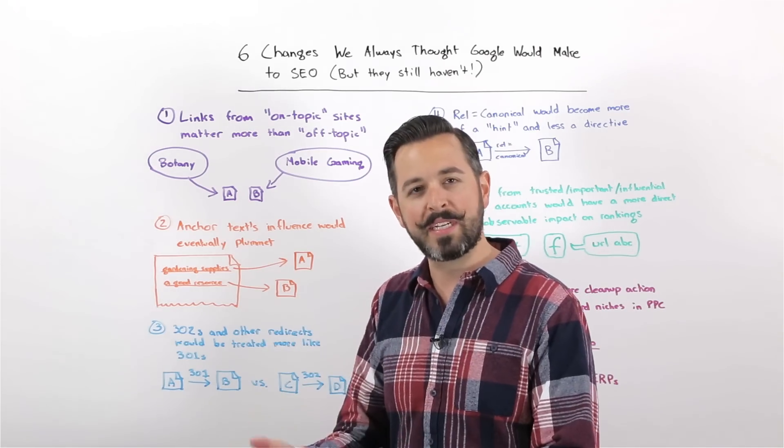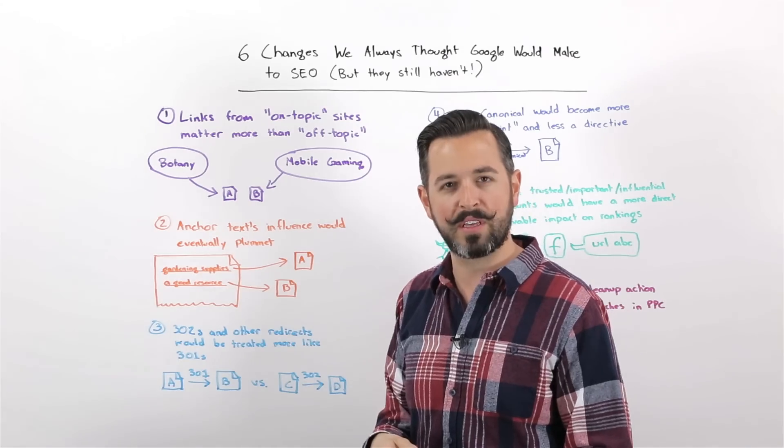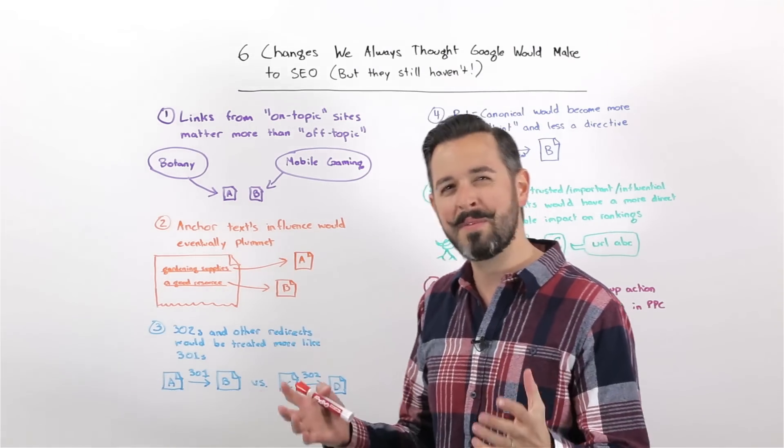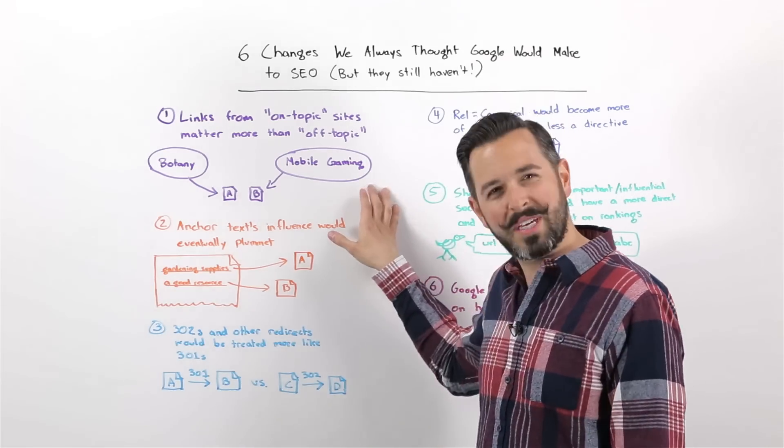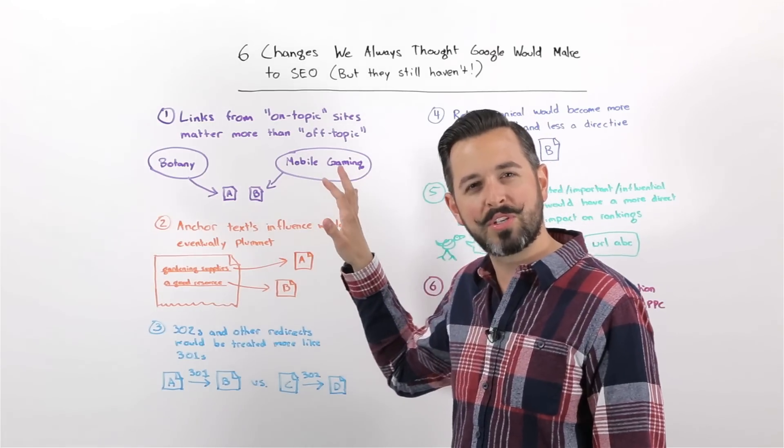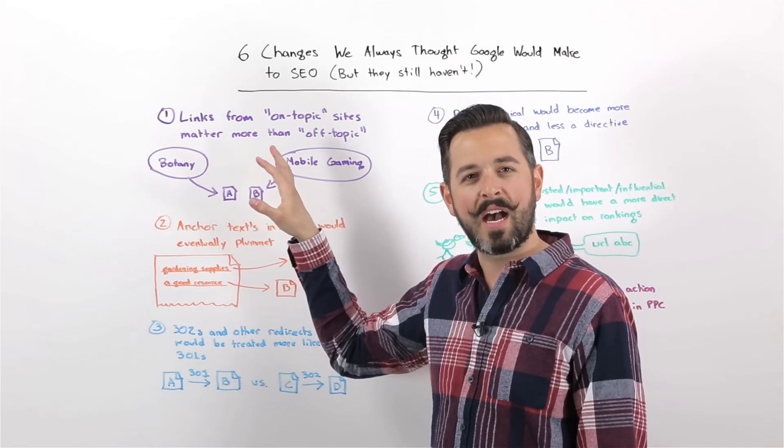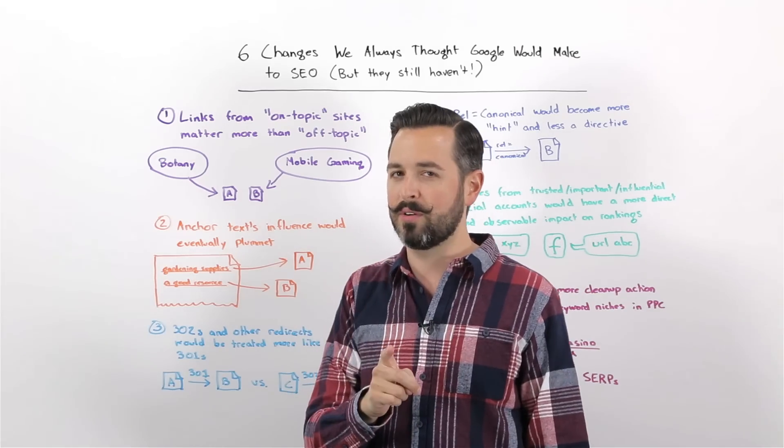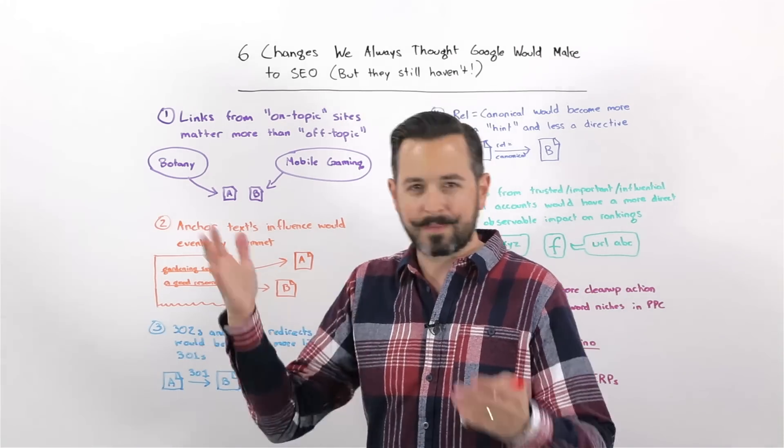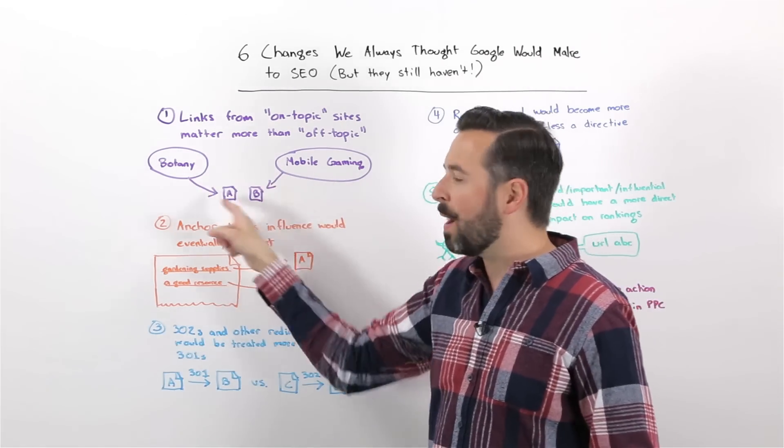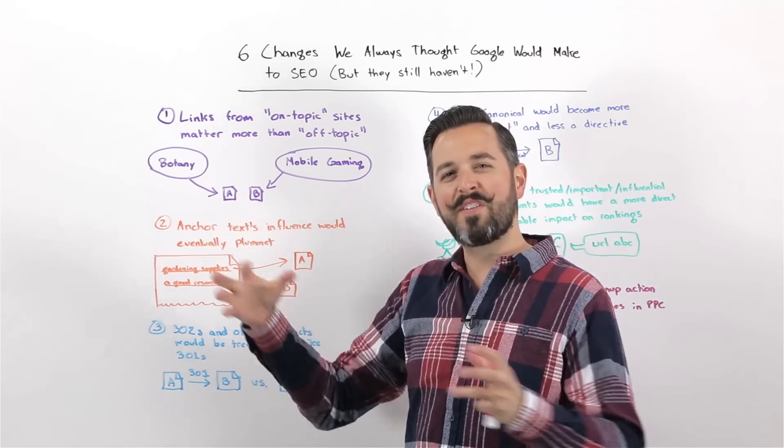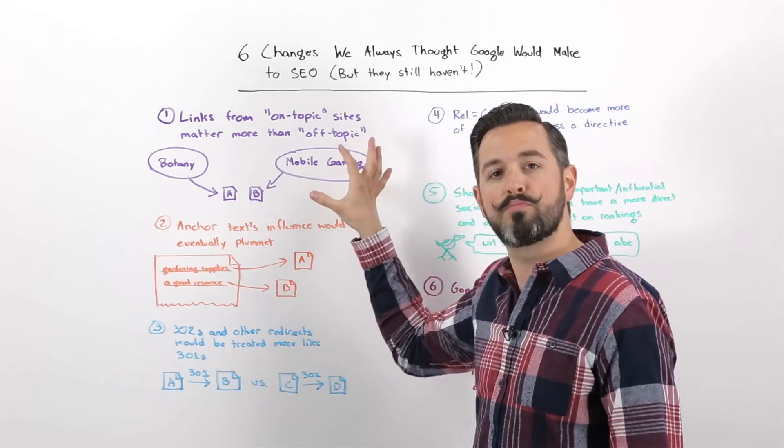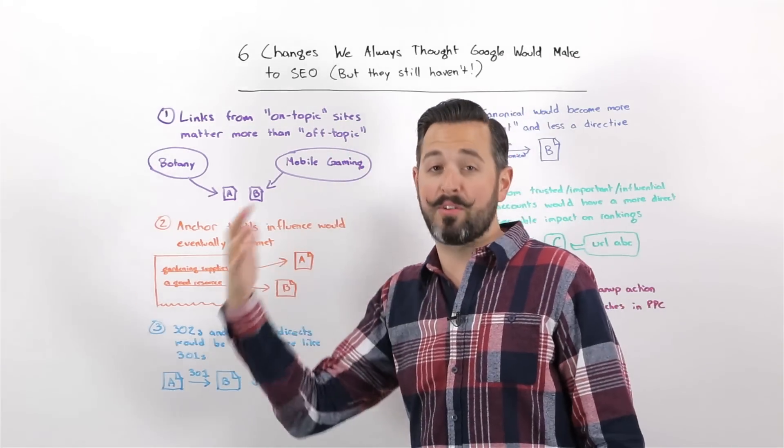There doesn't seem to be data behind it or to support it. And anyone who's analyzed this problem in depth, which a number of SEOs have over the years, a lot of people who are very advanced have gone through the process of classifying links and all this kind of stuff, seem to come to the same conclusion, which is that Google seems to really think about links in a more subject-context-agnostic perspective. And I think this might be one of those times where they have the technology to do it, they just don't want to.